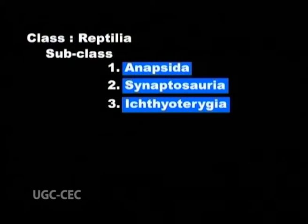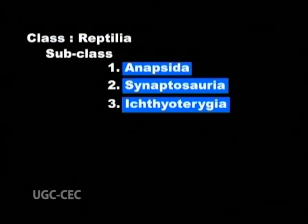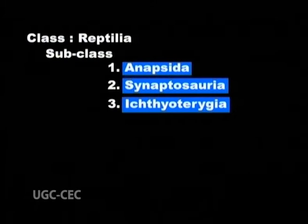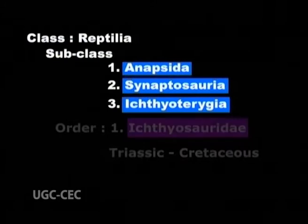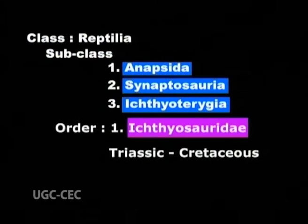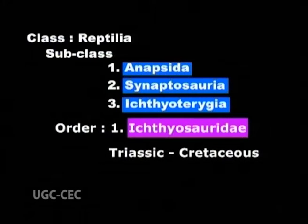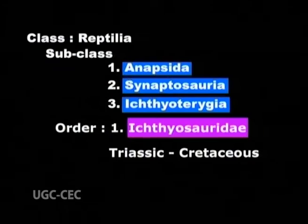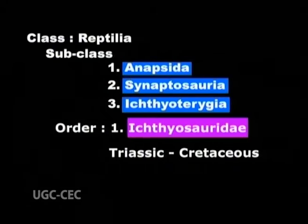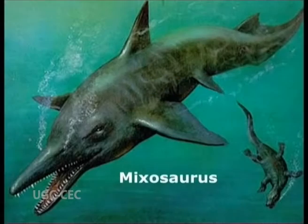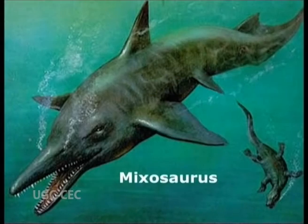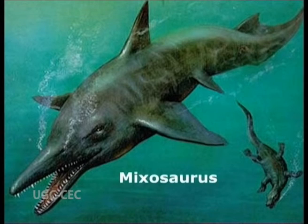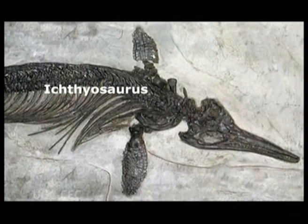Subclass 3, Ichthyopteresia. Order 1, Ichthyosauridae, lived during Triassic to Cretaceous. Examples are Mixosaurus and Ichthyosaurus.